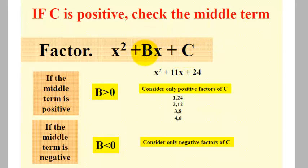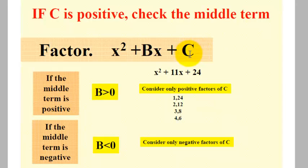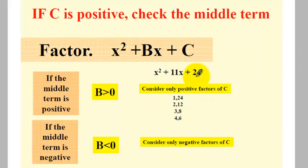The rule is: whenever c is positive, check the sign of the middle term — that sign determines the sign of the factors of c. If b is positive, all factors considered for c will be both positive. If c is positive but the middle term is negative, the factors of c that you consider will both be negative. Here is an example: c is positive, so to identify the signs of the factors, we check the middle term. Since the middle term is positive, the factors of 24 should all be positive.